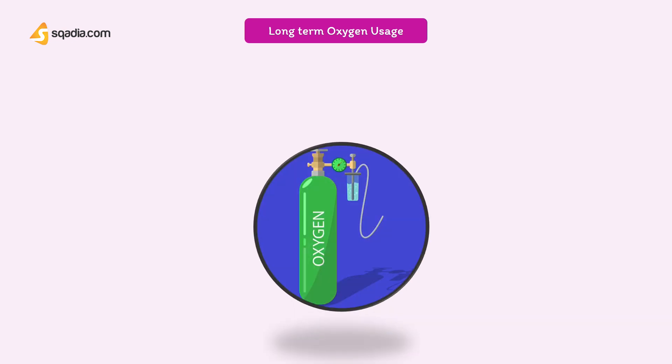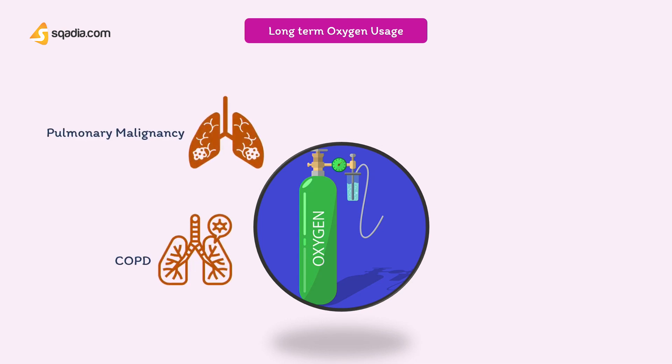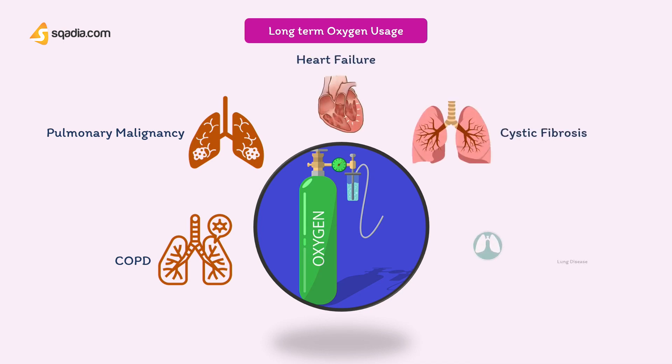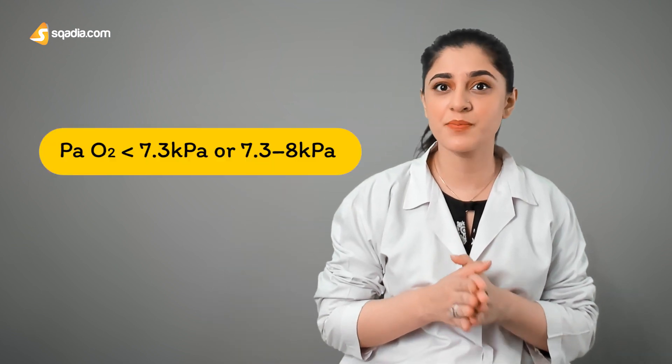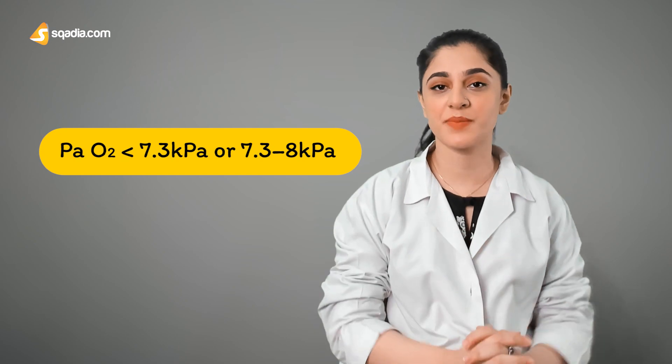Long-term oxygen is used to improve mortality and morbidity in patients with chronic hypoxia caused by chronic obstructive pulmonary disease, pulmonary malignancy, heart failure, or other lung diseases such as cystic fibrosis and interstitial lung disease. If the patient has polycythemia or evidence of pulmonary hypertension, the arterial partial pressure of oxygen should be maintained at less than 7.3 kPa, or between 7.3 and 8 kPa.